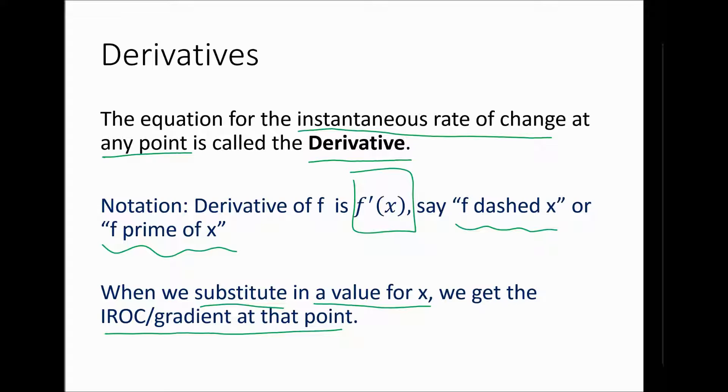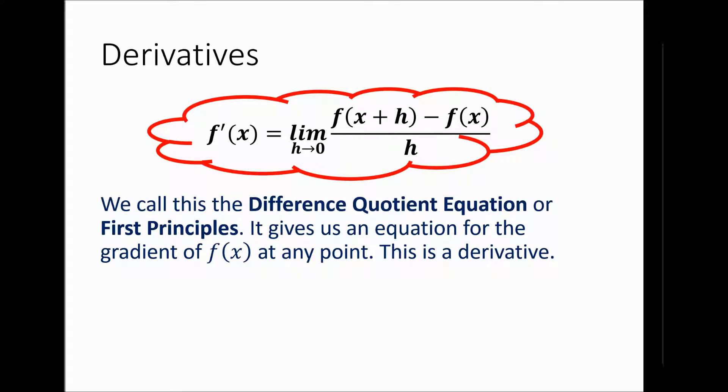So pause if you want to jot down those details. Otherwise, let's have a look at the formula. Here it is. Big red bubble, because it's super important. f dashed x, and that's how we say that, is equal to the limit as h tends to zero of f(x + h), meaning I plug x plus h into my function, minus the original function, all over h. Again, once we actually get into doing some examples, we'll see how things cancel out, and we do get a function in terms of x, which allows us to do that substitution.